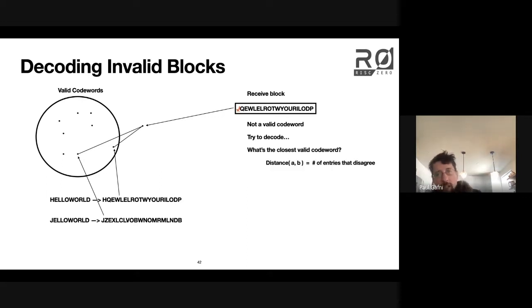The way that we measure distance here is by looking at the number of entries that disagree. This is the Hamming distance, the technical term for this. It comes up all over the place.